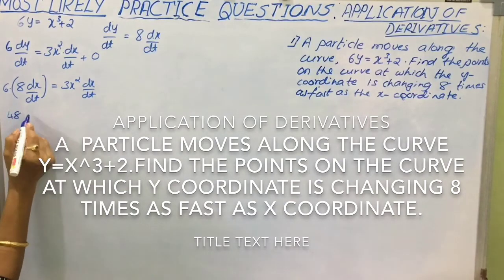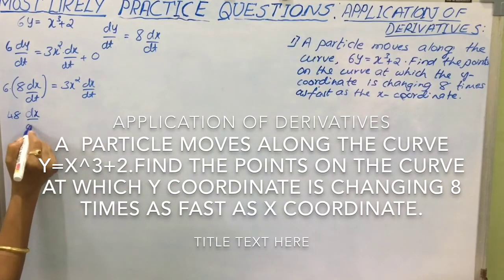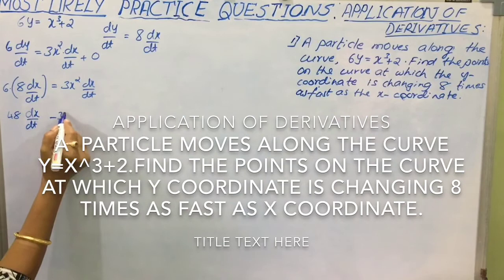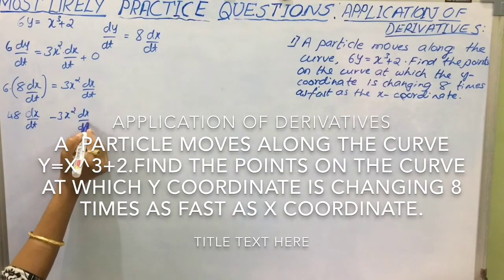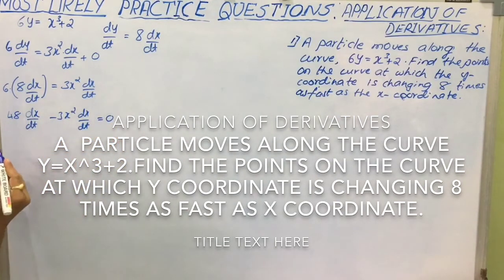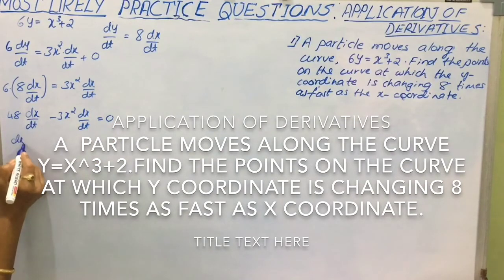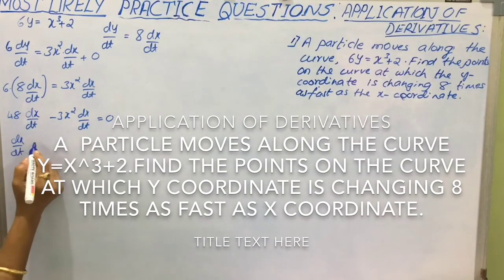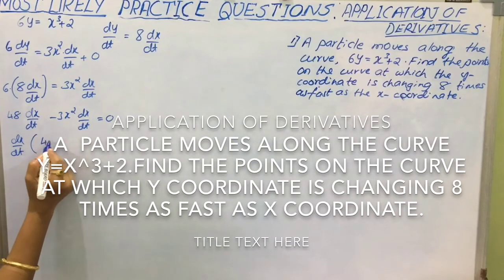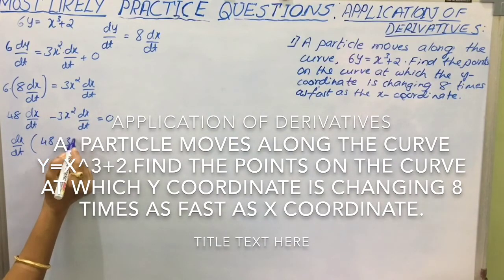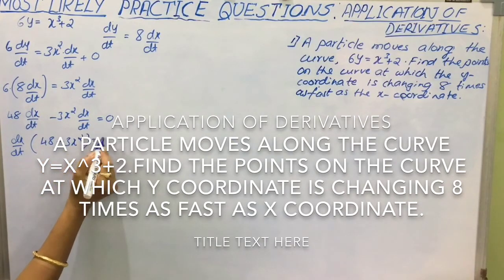6 times 8 is 48 dx by dt minus 3x square dx by dt equal to 0. Now we can take dx by dt as the common factor outside. So the remaining values 48 minus 3x square equal to 0.